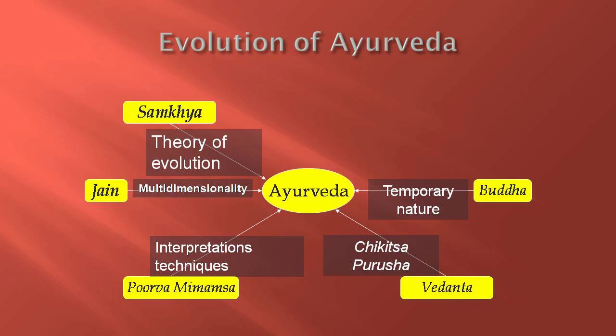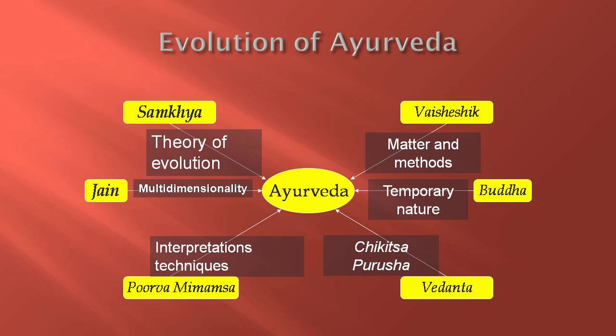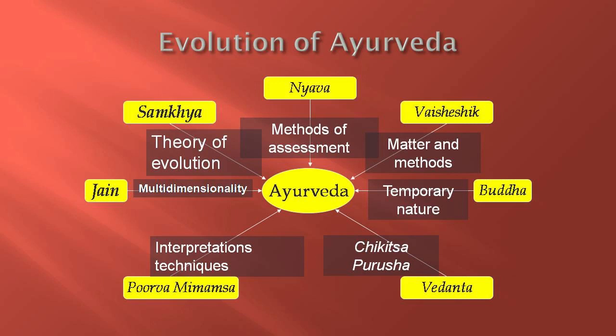From Purva Mimasa, we have taken interpretation techniques. From Vedanta Darshan, we have taken the concept of Chikitsa Purusha. From Bauddha Darshan, we have taken Kshanabhanguravad — the temporary and dynamic nature of things. From Vaisheshik Darshan, we have taken many concepts about matter and methods to handle matter. From Nyaya Darshan, we have taken the methods of assessment. And this has taken place even before Charaka, Sushruta or Vagabhata.